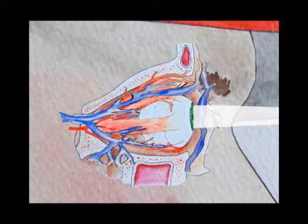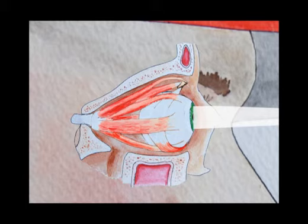Next, we can see the surrounding muscles which help move the eye in all directions. Now, let's cut the eye in half to see how light enters the visual system.